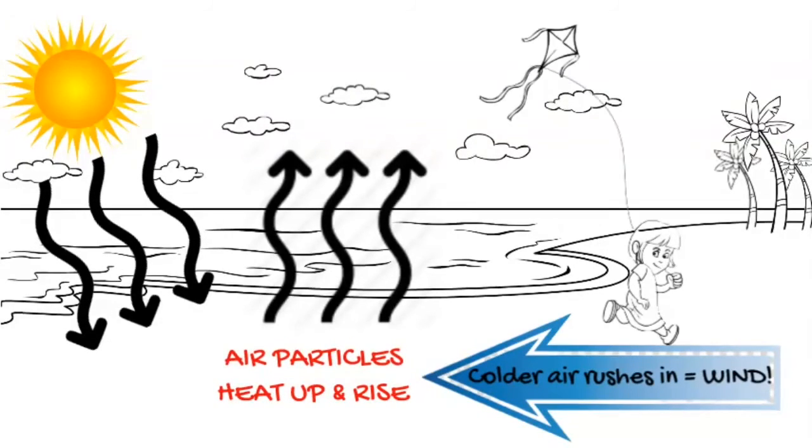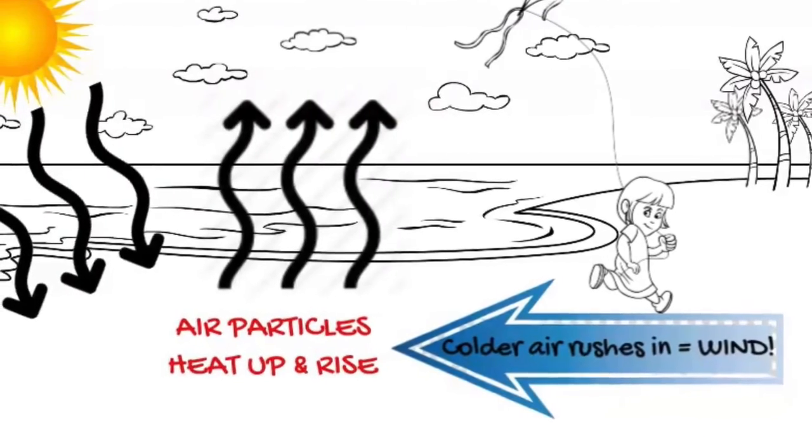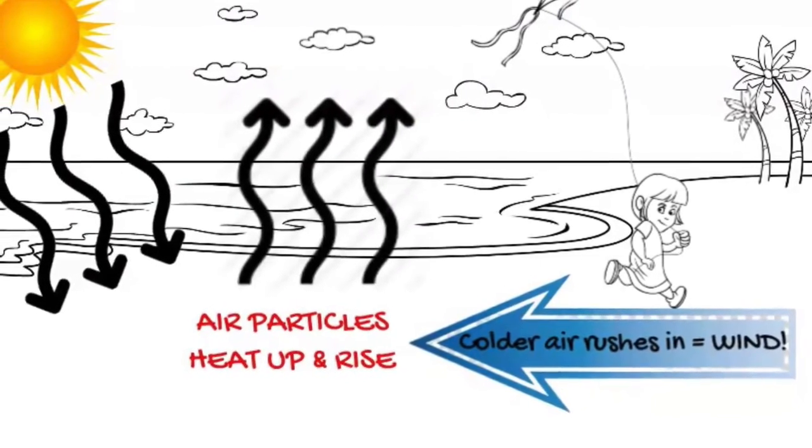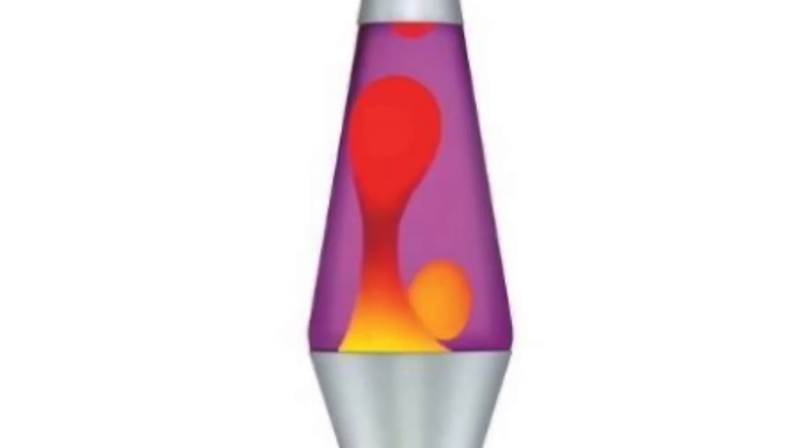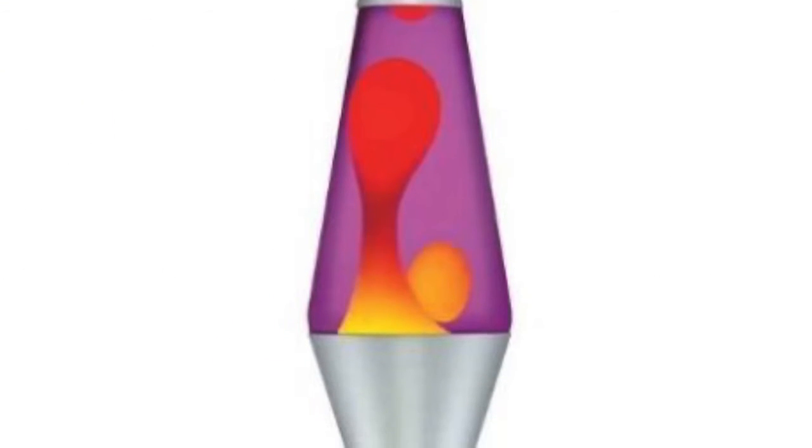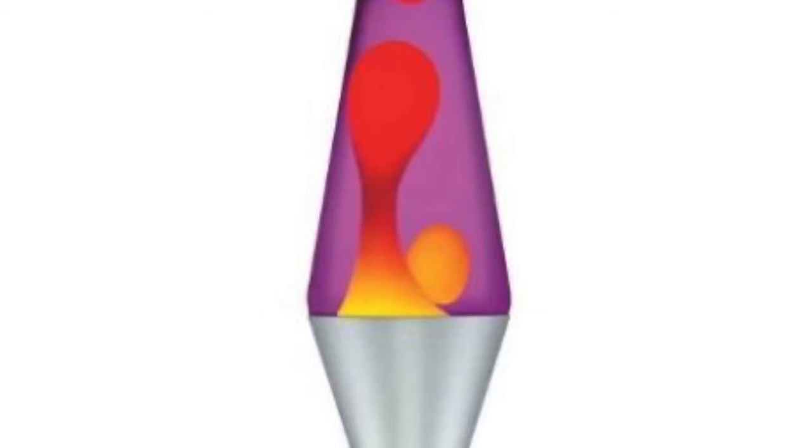That's what makes wind, and wind is what helps us do things like fly our kites. Now a different kind of lava lamp can help us talk about wind. In this kind of lava lamp, we have a heat lamp in the base and there's two different kinds of liquids inside the lamp itself.